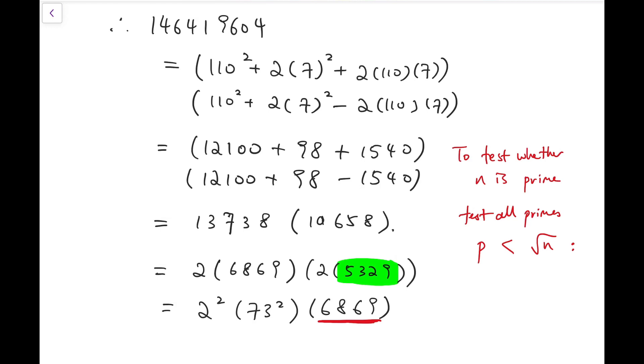So this we have to take a look. What's the square root of the number 6869. So notice that, let's take a multiple of 10, say 80. The square is 6400. So it's larger than 80.